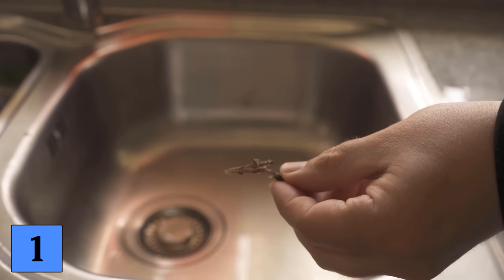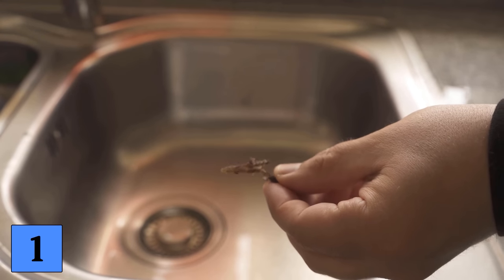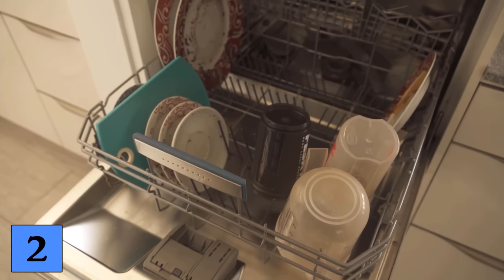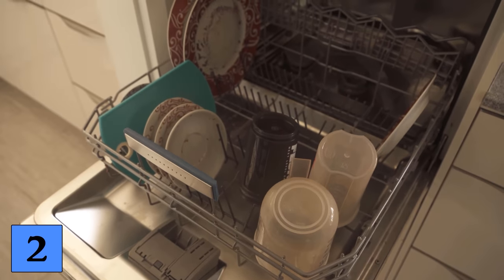What you should do, however, is to remove larger pieces of food from the plate beforehand, of course, so that they do not clog the filter of your dishwasher. Mistake number 2 is to turn on the dishwasher when it's not really full.